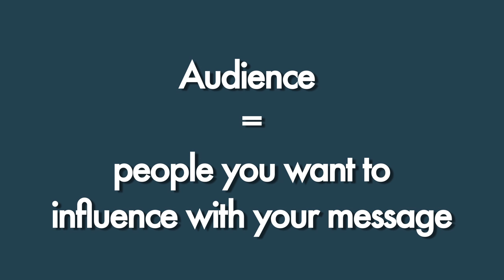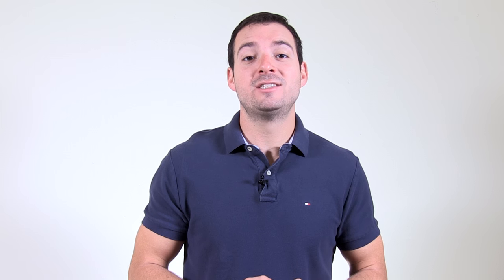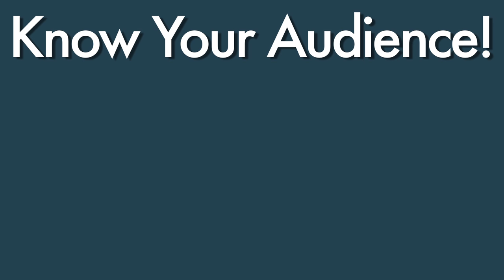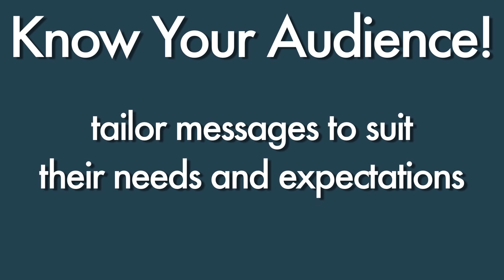Unit three is all about audience — the people you want to influence with your message. You will learn that your own personal traits and the traits of your audience are very important. You'll also learn what perception is and how it can affect the way your audience receives your message. The key point in unit three is that you must know your audience so that you can tailor messages to suit their needs and expectations.